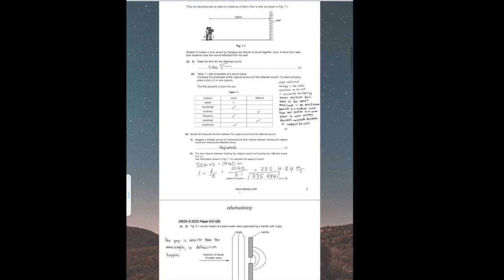Part II states: Table 7.1 lists properties of a sound wave. Compare the properties of the original sound and the reflected sound — place a tick in one column for each property. The properties that will stay the same are the speed, wavelength, frequency, and the fact that it's a longitudinal wave. The characteristics that will change between the original sound wave and the echo are the loudness and amplitude. This is because, when reflected, energy is lost due to absorption by the wall plus scattering.